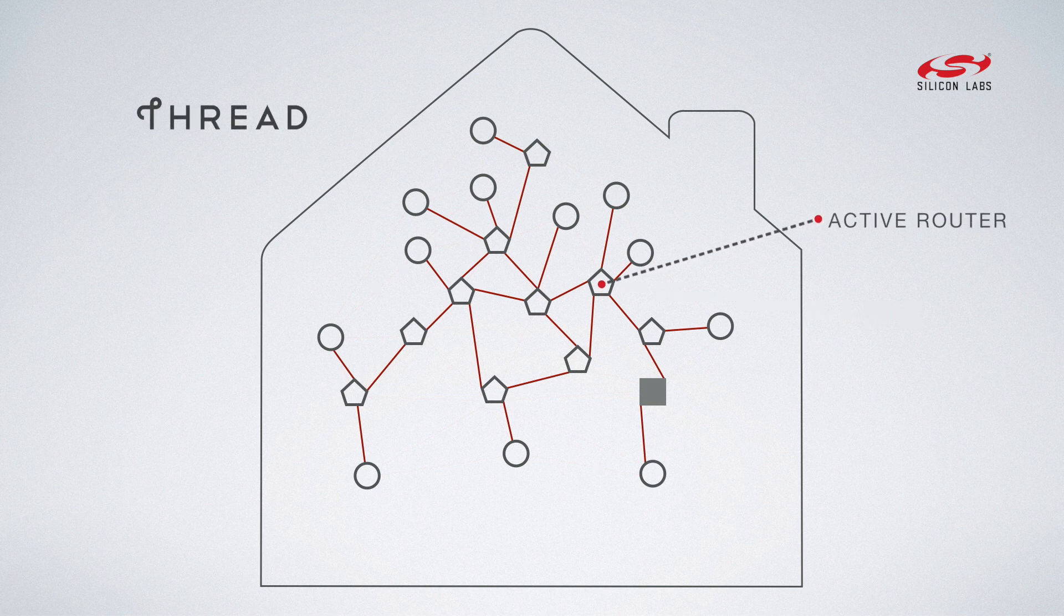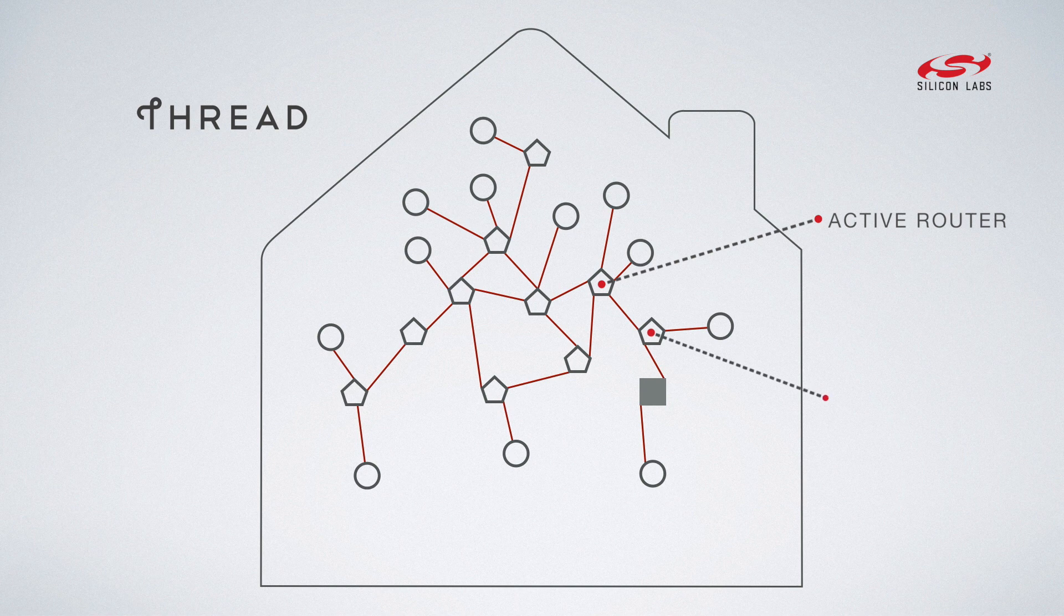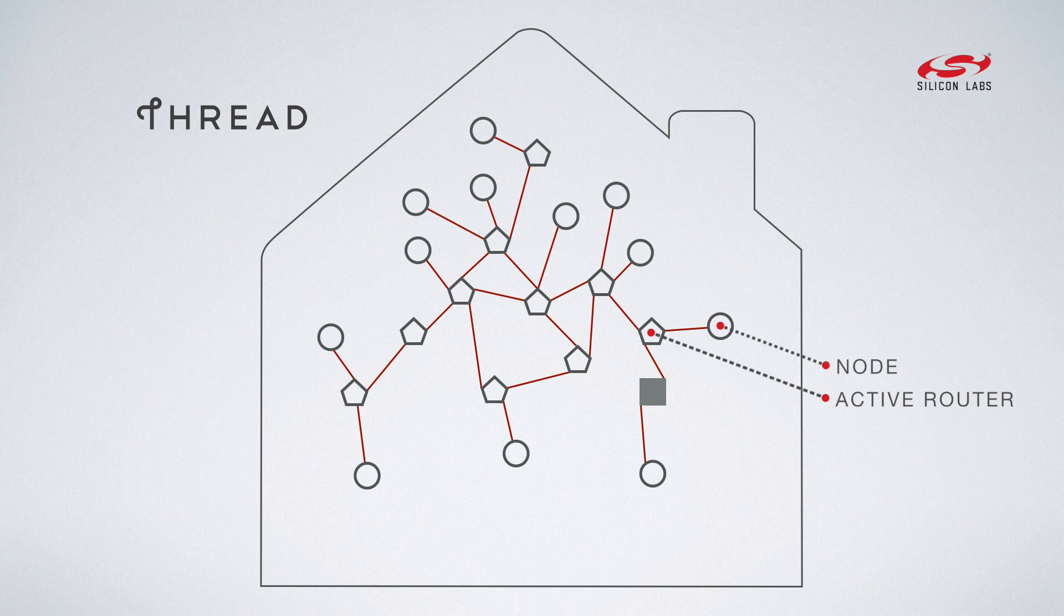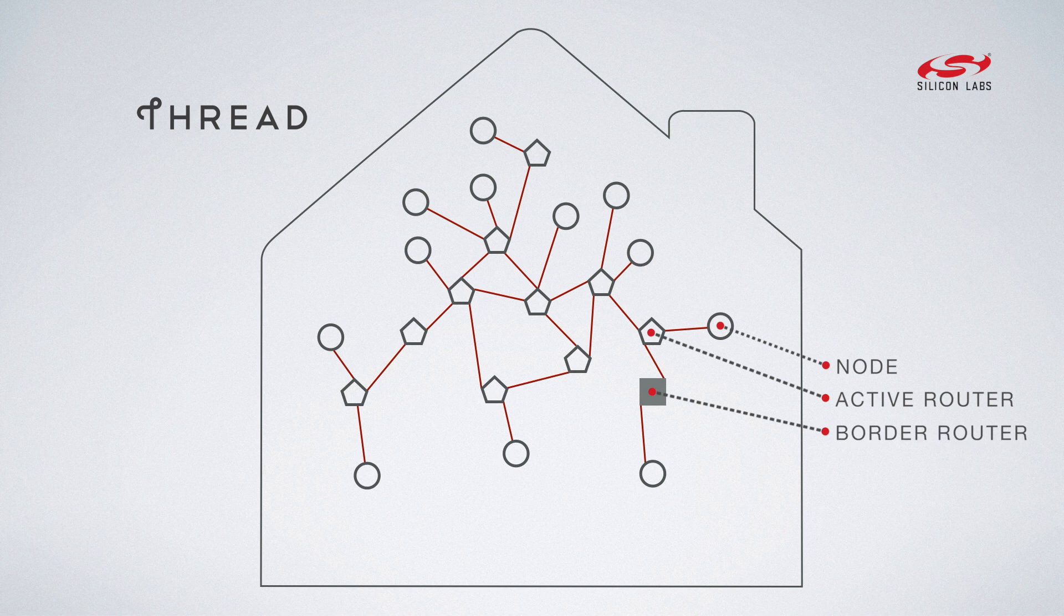The set of active routers has to be chosen such that they themselves form a connected network and so that every node has at least one neighbor that is an active router. The active routers exchange routing information so that each one has a complete set of routes to the other active routers and to any border routers.